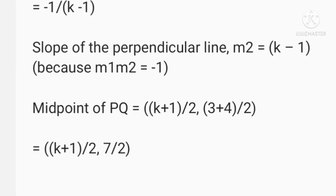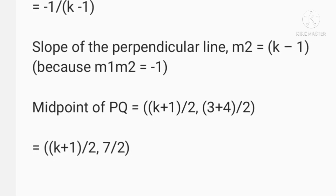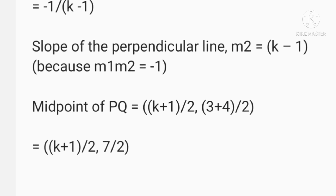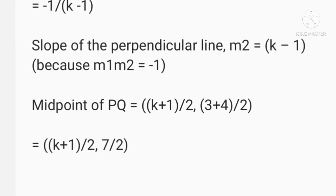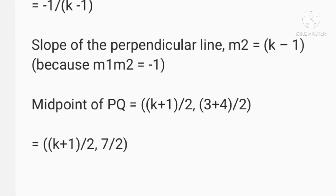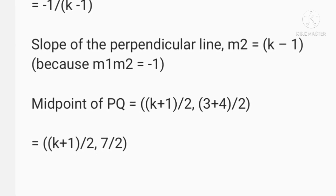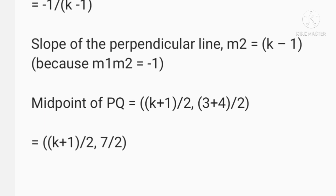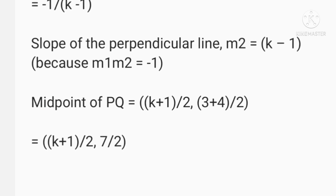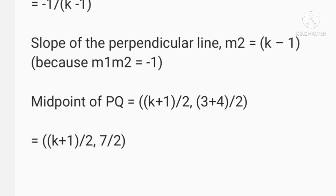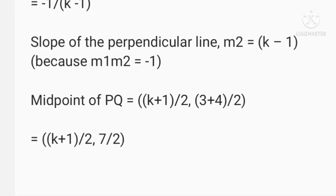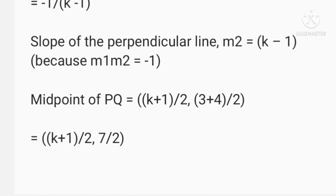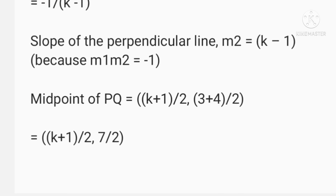The slope of the perpendicular line m2 is equal to (k - 1), since m1 × m2 = -1. Now let us find the midpoint of PQ, which is ((k + 1)/2, 7/2).